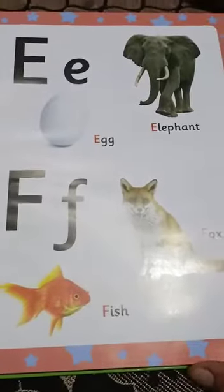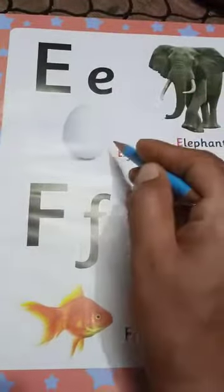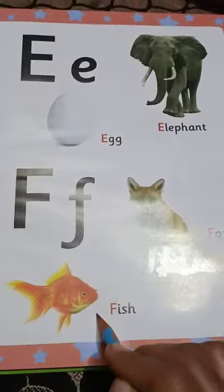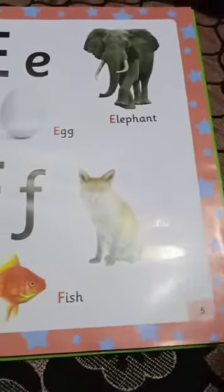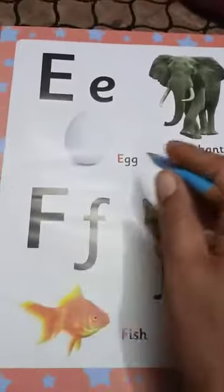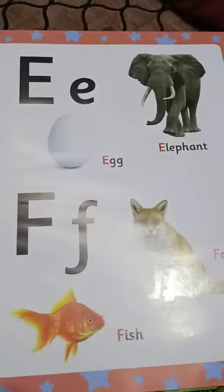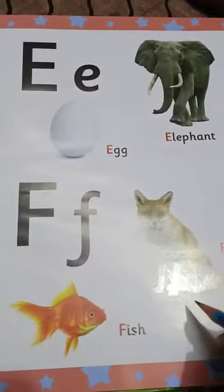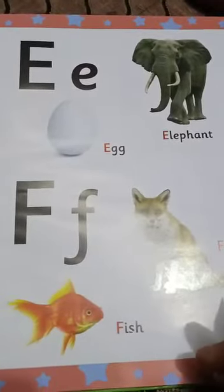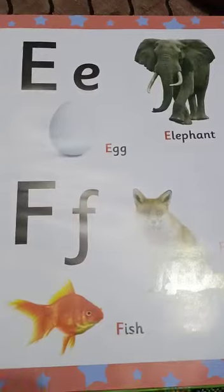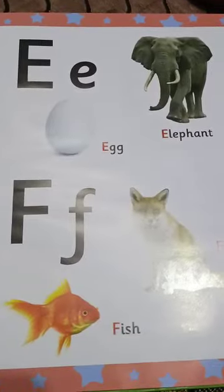Okay — E for elephant, E for egg, F for fox, and F for fish. Yeh page number 5 aap aaj read karenge. This is your today's reading work. Thank you. God bless.